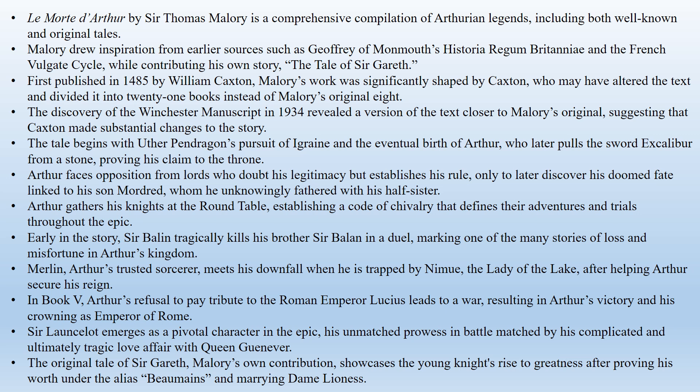The tale also follows Arthur's marriage to Guinevere and the establishment of the Round Table. Notably, Merlin, the wise sorcerer, meets his end when he is trapped by Nimue, the Lady of the Lake. In Book 5, Arthur refuses to pay tribute to the Roman Emperor Lucius, leading to a war. Arthur's forces ultimately triumph and he is crowned emperor in Rome.